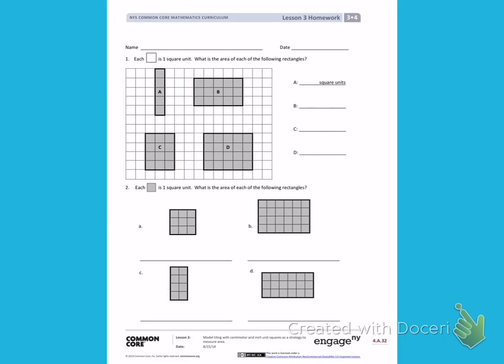So if I look at rectangle A, I have 1, 2, 3, 4, 5 squares. So my area is 5 square units.